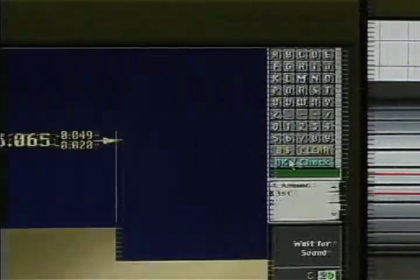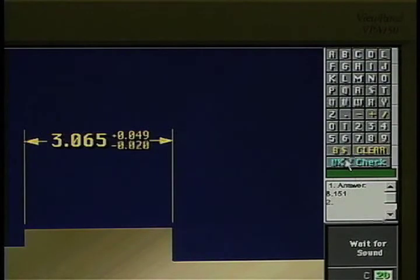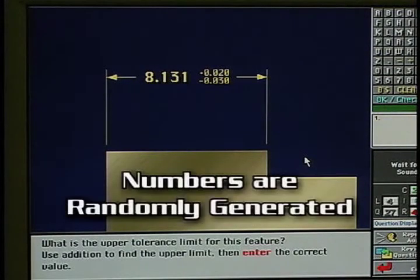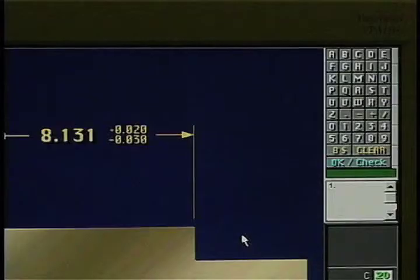Other simulations require the person to perform math operations. What is the upper tolerance limit for this feature? Use addition to find the upper limit, then enter the correct value. In this example, the computer has created the math problem by randomly selecting a pair of numbers from a range of values. That means students can't simply memorize the right answers since each time the question appears, another set of numbers is selected.